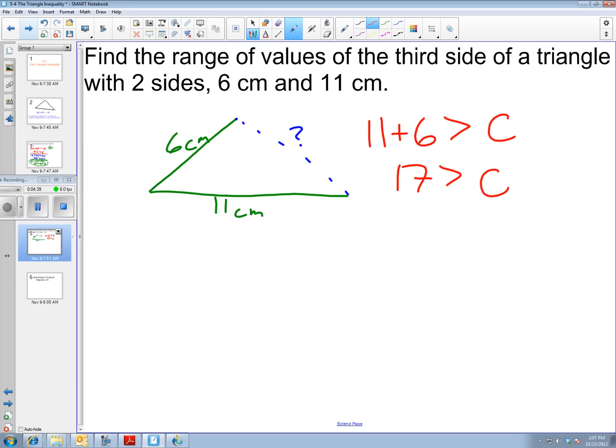We know that C cannot be bigger than 17. The other thing we need to think about is how small can it be? Well, it actually can't be all the way down to 1 because 1 plus 6 would not be bigger than 11. We know that 11 is going to be the longest side. How we calculate then is we take 6 plus our unknown side and that has to be bigger than 11. Solving this inequality, we get C is greater than 5.